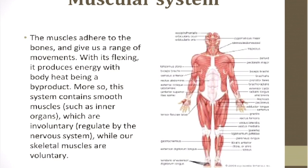The muscular system: muscles adhere to the bones and give us range of movement. With its flexing it produces energy, with body heat being a byproduct. This system contains smooth muscles such as inner organs which are involuntarily regulated by the nervous system, while our skeletal muscles are voluntary. It's important to know the difference — involuntary is like your heart beating or your liver working, things you can't control. Voluntary would be flexing your arm or lifting it up and down.